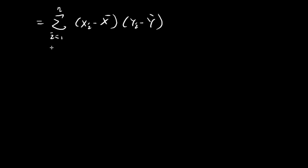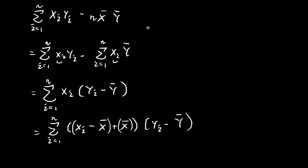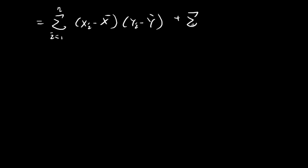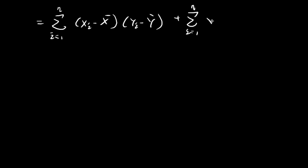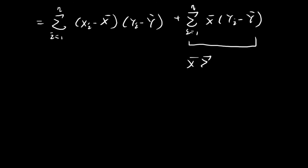Plus the sum of the sample mean of x times (yi minus the sample mean of y). This second term is actually going to be equal to zero. You can see this because, summing everything out, you can first take out the sample mean of x, and then you're summing all the y terms minus n copies of the sample mean of y.